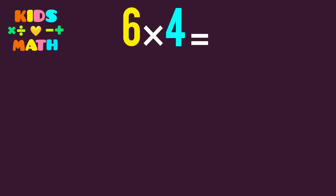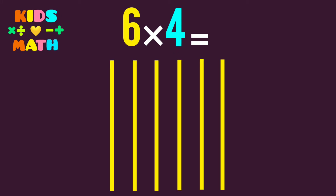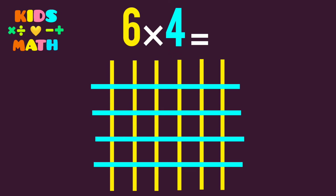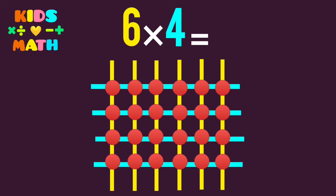6 times 4. The first number is 6, so we derive 6 lines. The second number is 4, so we derive 4 lines. Then we count the common points.